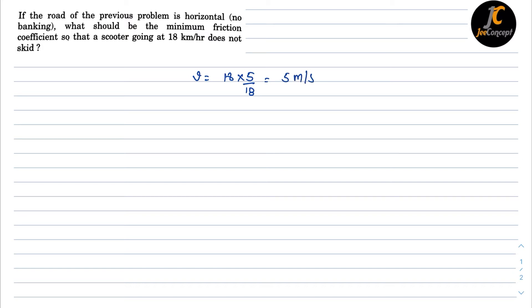Now we know the relation of mu and velocity which is v equals square root of mu r g. This is the case when there is no banking, right?